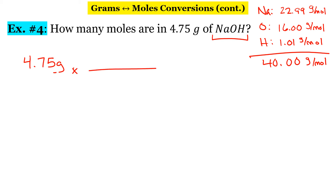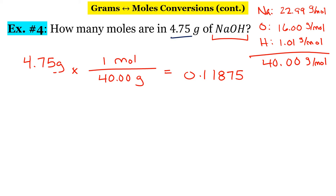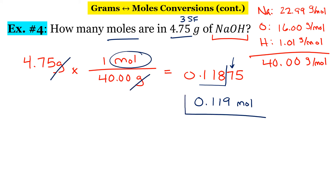Adding those three numbers together gives a molar mass of 40.00 grams per mole. Remember, our units need to be diagonal from each other, so the grams go on the bottom: 40 grams for every one mole of sodium hydroxide. Multiplying this out gives 0.11875. Our original number 4.75 has three significant figures — the leading zero doesn't count — so we round to 0.119 moles.